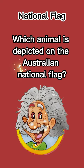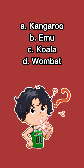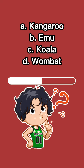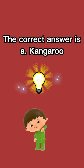National flag question: Which animal is depicted on the Australian national flag? A) Kangaroo, B) Emu, C) Koala, D) Wombat. The correct answer is A, kangaroo.